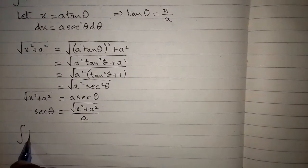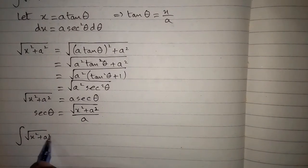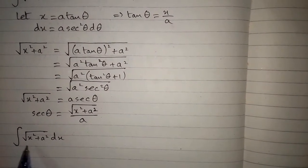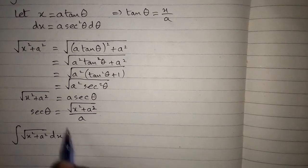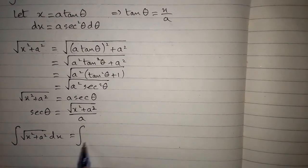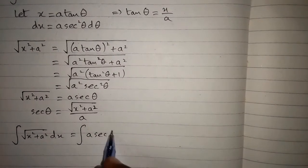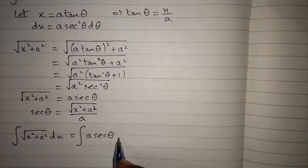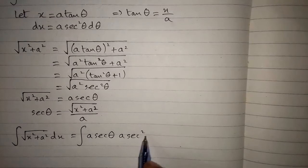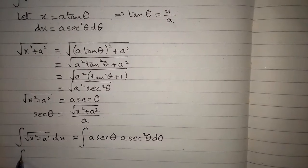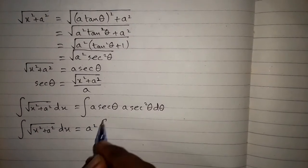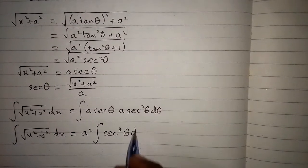We will now write the integral of the square root of x squared plus a squared dx. Substituting, the square root of x squared plus a squared becomes a sec θ, and dx is a sec squared θ dθ. So the integral becomes a squared times the integral of sec cubed θ dθ.